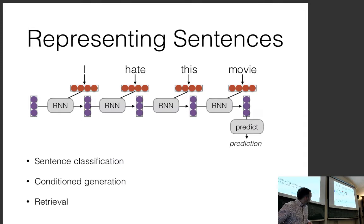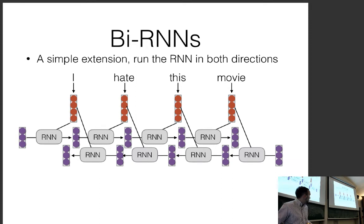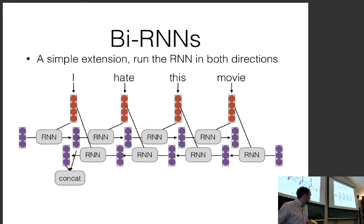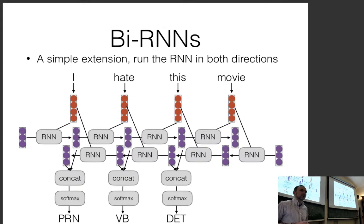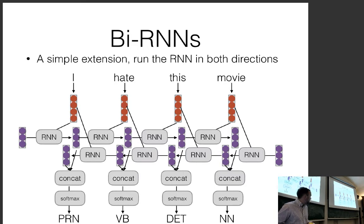For the problem of not being able to represent future context, bidirectional RNNs are the standard fix. Instead of a single RNN, we have two: one reads the input from left to right, one from right to left. We concatenate the two vectors and use them for predictions. This is very standard for sequence labeling and a very strong baseline, especially with LSTMs. In some cases with enough training data, the gains from doing more complicated things are minimal.